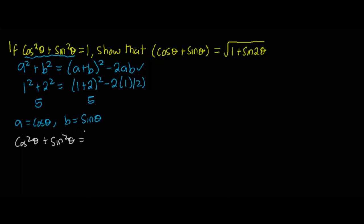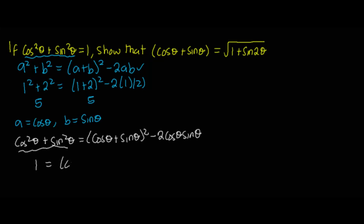Applying the property of algebra, this gives us (cos θ + sin θ)² minus 2 cos θ sin θ. But we've seen from the question that cos²θ + sin²θ is 1, and therefore this is giving us 1 = (cos θ + sin θ)² minus 2 cos θ sin θ. Now I'm going to relocate 2 cos θ sin θ to the right hand side.